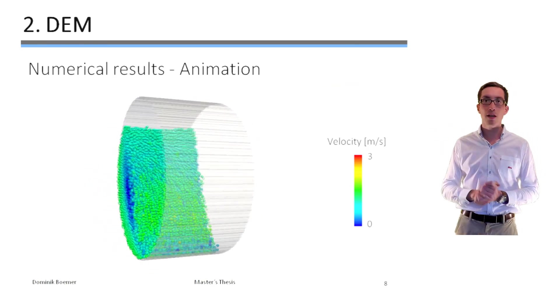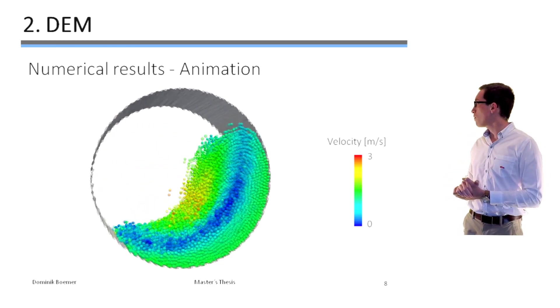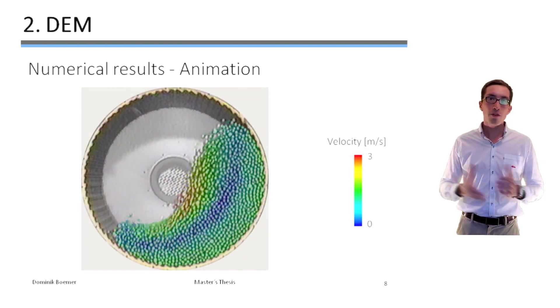So the translation velocity of the balls. So now I will superimpose a picture of the laboratory mill. And the correlation is quite good.